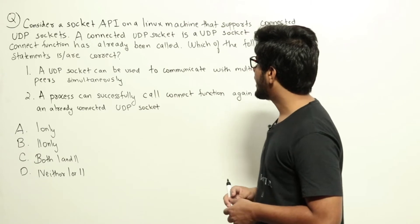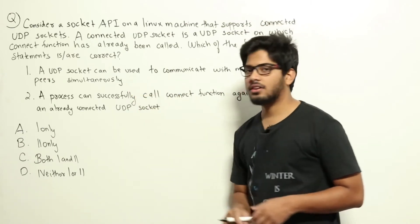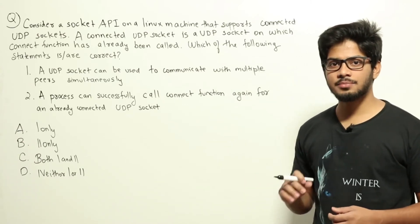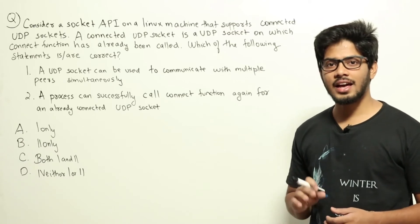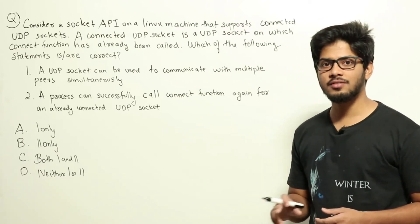Statement 1: A UDP socket can be used to communicate with multiple peers simultaneously. This statement is false. Even though UDP is connectionless, in a Linux machine the UDP socket will have a specified IP number and a port. One IP number and a port will uniquely identify one peer only.